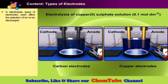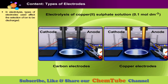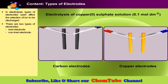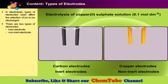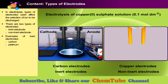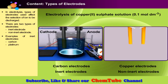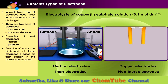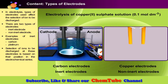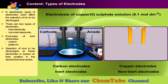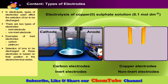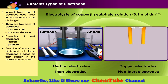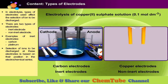In electrolysis, the types of electrodes used affect the selection of ions to be discharged. There are two types of electrodes: inert electrodes and non-inert electrodes. An electrode like carbon is called an inert electrode — it does not interfere with the reaction occurring at the surface of the electrode. Inert electrodes act as a point of connection between the electrical circuit and the solution, so the selection of ions to be discharged is based on their position in the electrochemical series. Platinum is also an example of an inert electrode; however, it is rarely used in school labs because it is expensive.